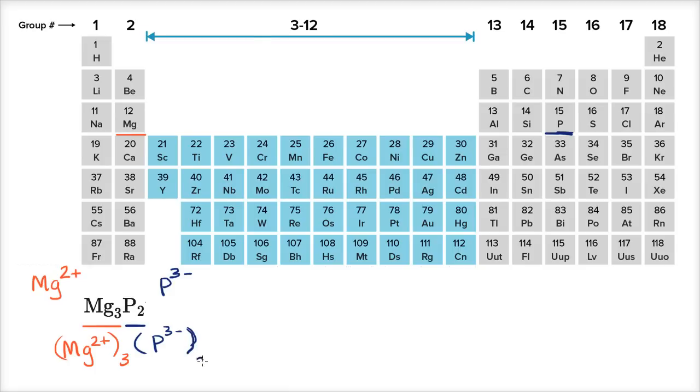Now the whole reason why I wrote out the constituent ions like this is to make sure that it'll all end up being neutral. The three magnesium ions will have a collective six plus charge, and the two phosphides are going to have a collective six minus. And so when you add the six pluses and the six minuses, they are all going to cancel out.